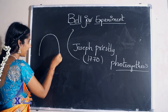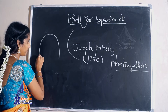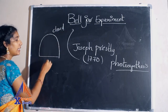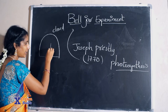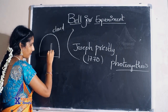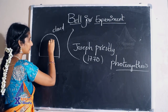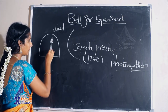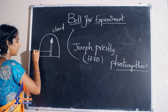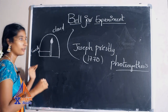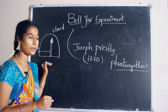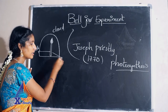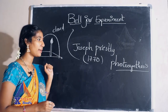In the Bell Jar experiment, he took one bell jar — it is closed — and he placed one candle inside it. While doing this experiment, after sometime he observed that this candle was not lighting after some time.